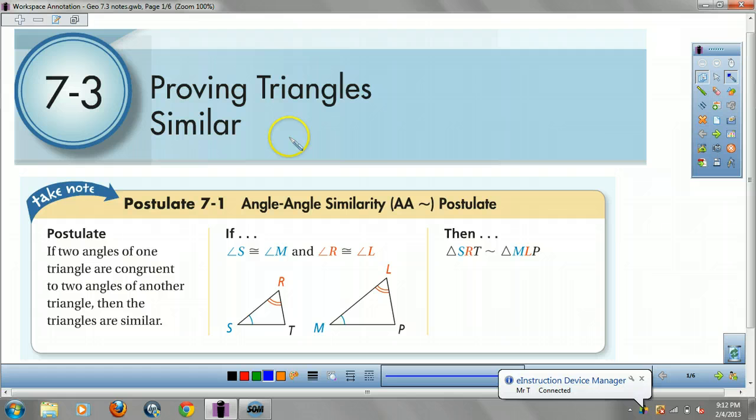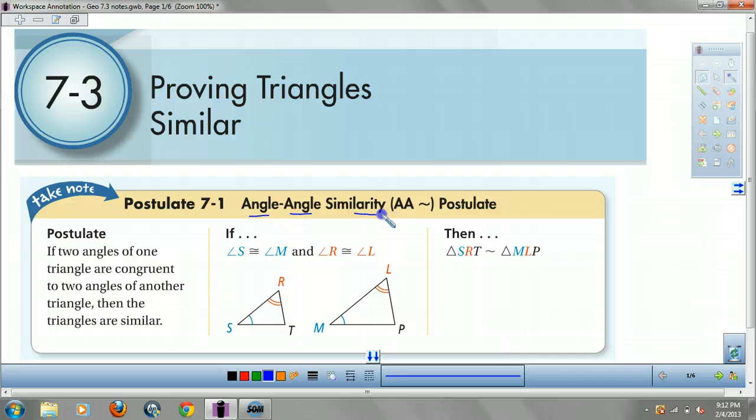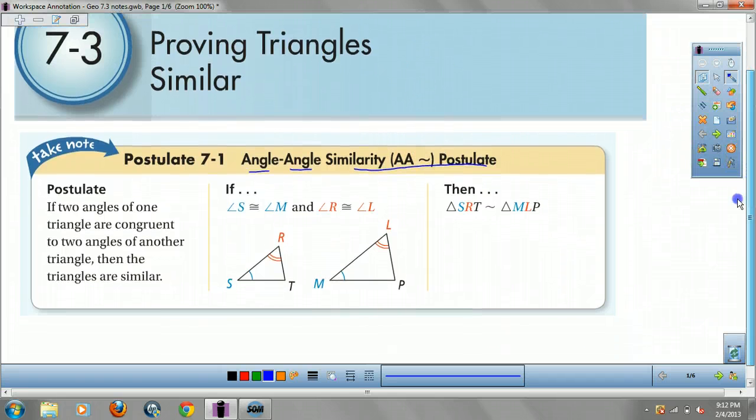Okay, we got some theorems we got to do. First theorem, angle-angle similarity postulate. What this states is if you have two triangles, and two of the triangles' angles are congruent, then the triangles are similar, which means the ratio of their sides are proportional, as well as all the angles are congruent.